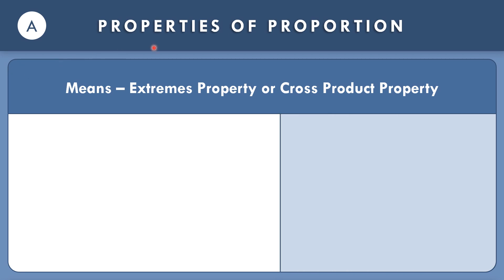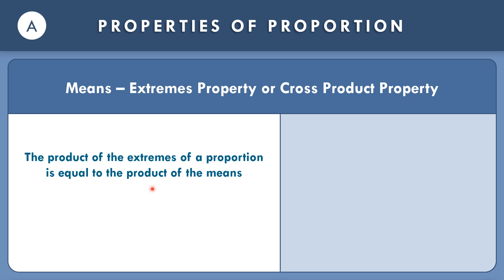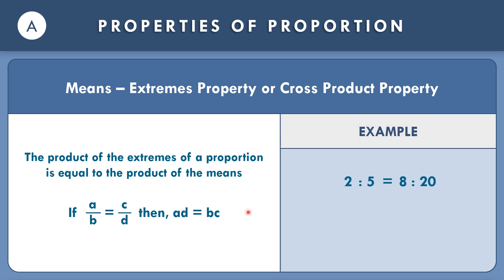What are the different properties of proportion? First, Property A: the extremes property or cross product property. The product of the extremes of a proportion is equal to the product of the means. So if A over B equals C over D, then the extremes AD equals BC. In the given example, 2 is to 5 equals 8 is to 20: multiply the extremes, 2 times 20 equals 40, and the means, 5 times 8 equals 40. The product of the extremes equals the product of the means.